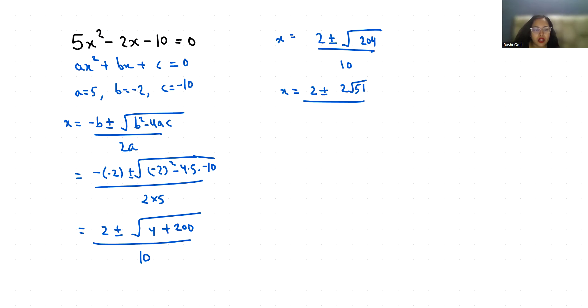So x = (2 ± 2√51) / 10, which simplifies to x = (1 ± √51) / 5.